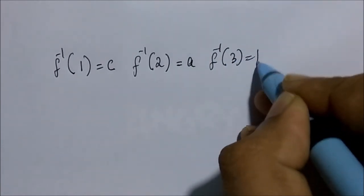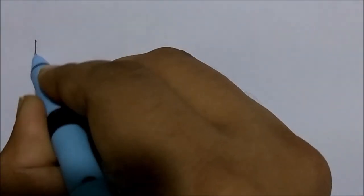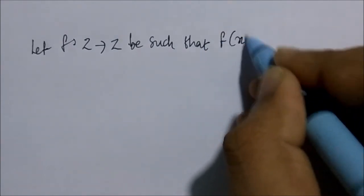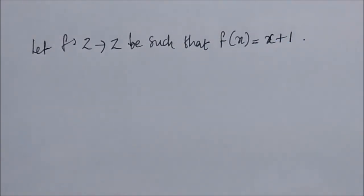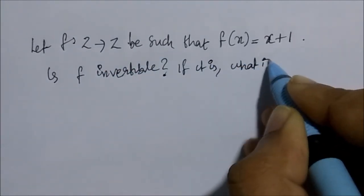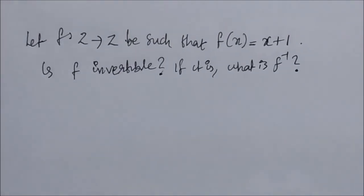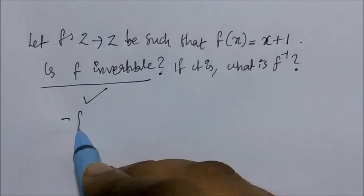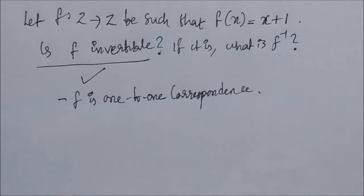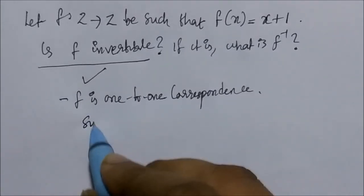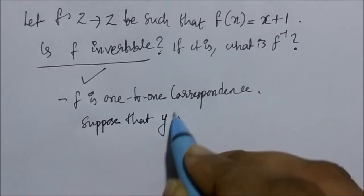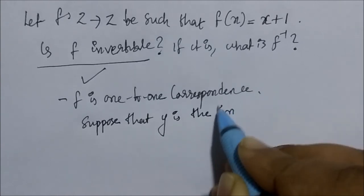Let f from the set of integers to the set of integers be defined by f(x) = x+1. Is f invertible? Yes, it is invertible because f is a one-to-one correspondence — we have already proved in previous videos that f(x) = x+1 from ℤ to ℤ is both one-to-one and onto.